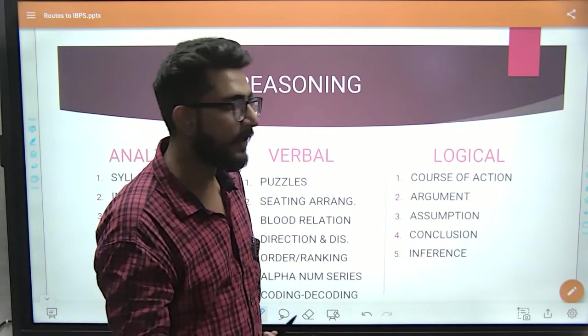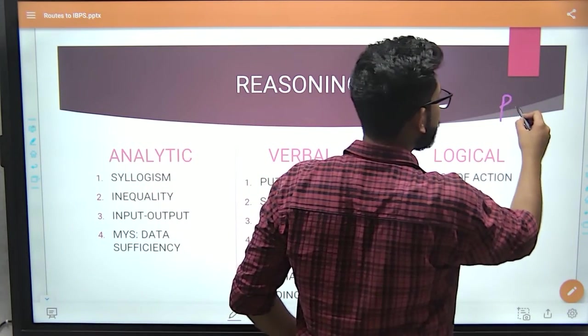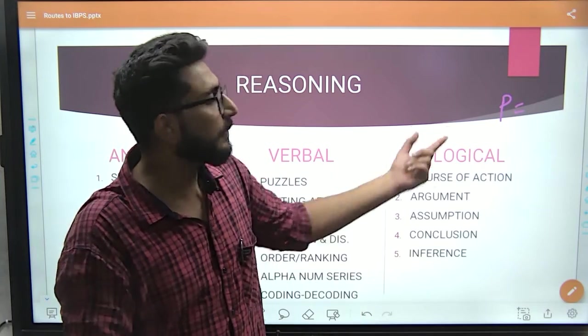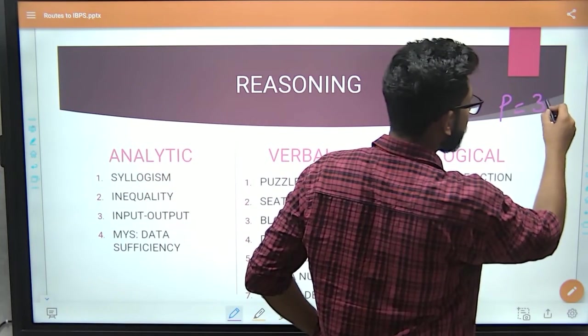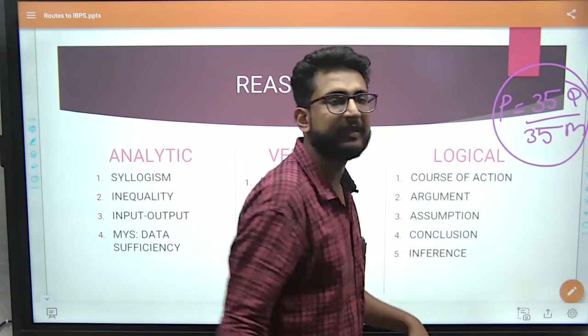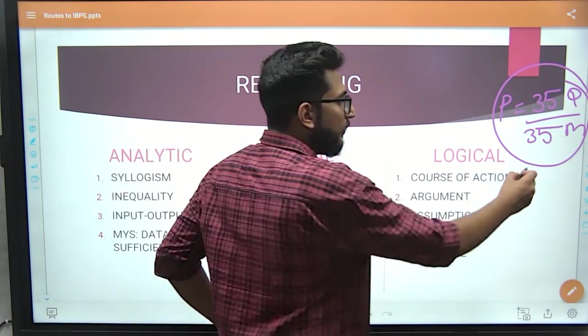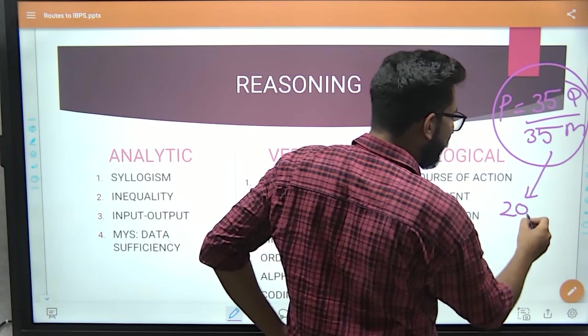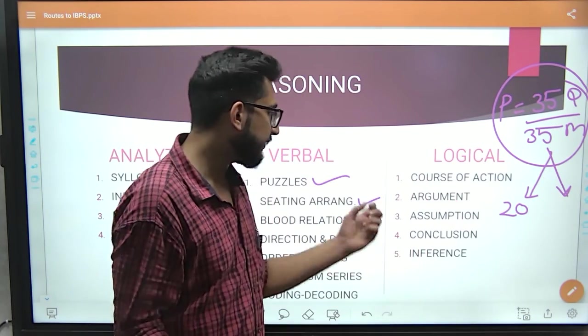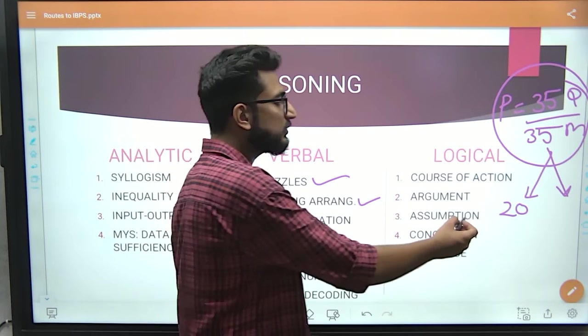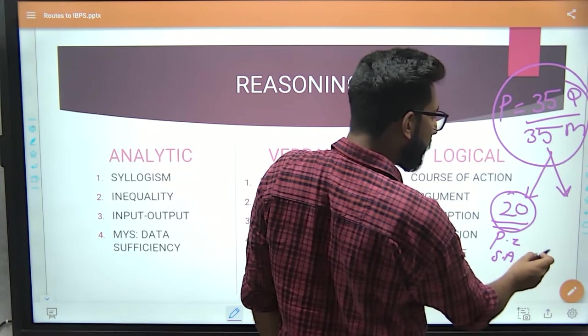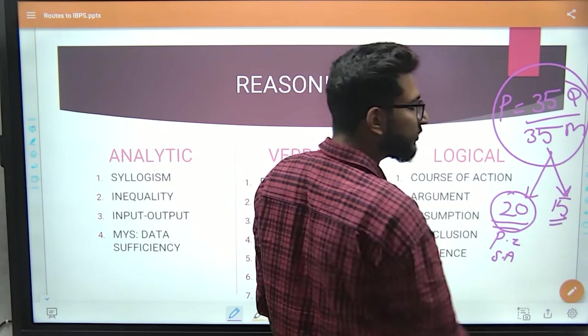How to score full marks in reasoning? If I talk about paper pattern, in IBPS Clerk and IBPS PO prelims, there are 35 questions of 35 marks. Out of which approximately 20 questions are puzzle and sitting arrangement. They can give 15 questions or 25 questions, but the general pattern is 20 questions from puzzle and sitting arrangement. And the 15 questions we have, the rest of the chapters come from here.